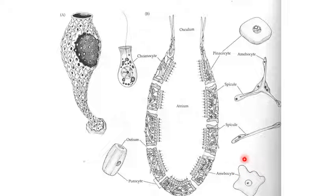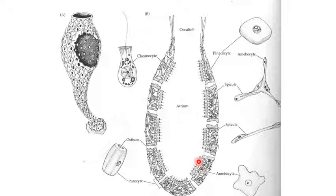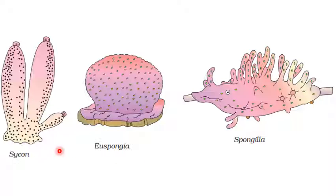This is the general organization of a sponge. You need to remember the names, certain features, and the examples of this group. The examples given in the NCRT book are Sycon, Spongia, and Spongilla — which is the freshwater sponge.